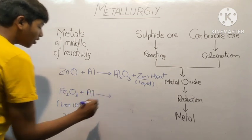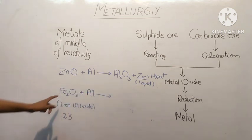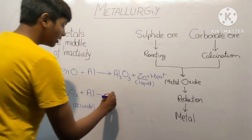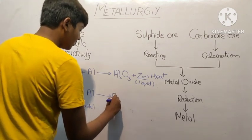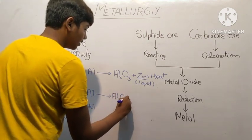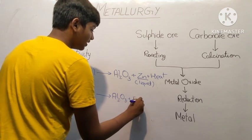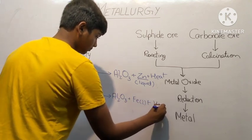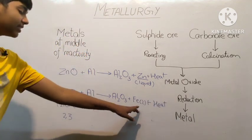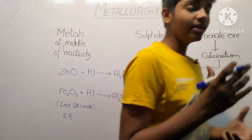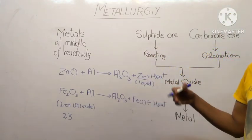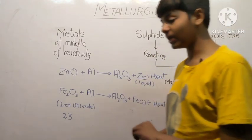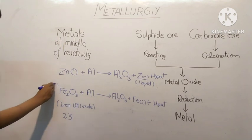We know aluminum is more reactive than iron, so it will replace iron. So we will get Al2O3 and Fe, iron in liquid state, plus heat. Since this is produced in liquid state, it is used to join railway tracks made of iron or any other cracks in iron machinery, and this reaction is also called thermite reaction.